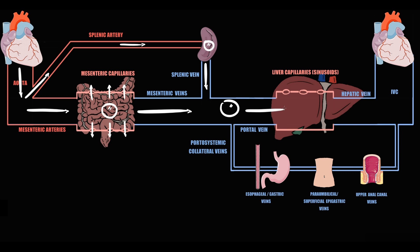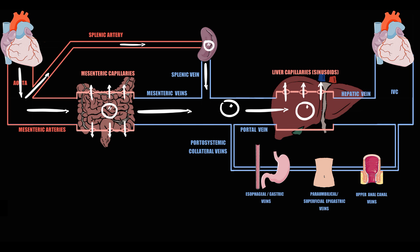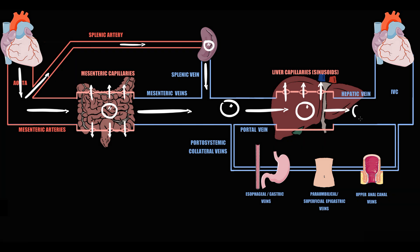The portal vein drains blood into the liver, where fluid exchange occurs in liver capillaries that we call sinusoids. After the fluid exchange in liver capillaries, blood goes into the hepatic vein, and from the hepatic vein blood is drained into the inferior vena cava.